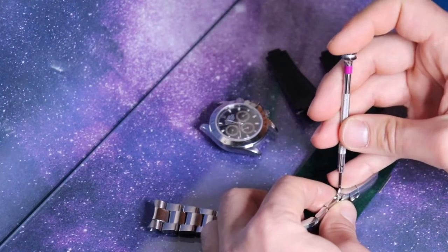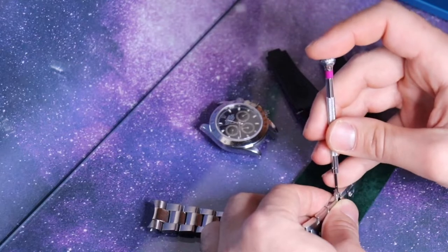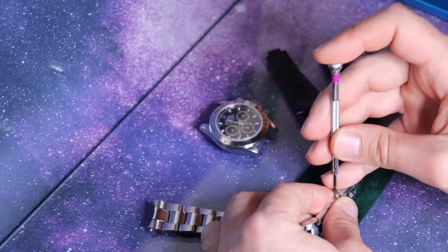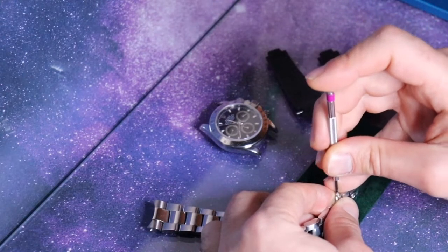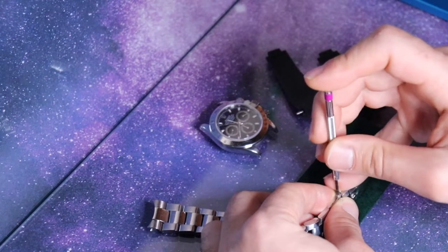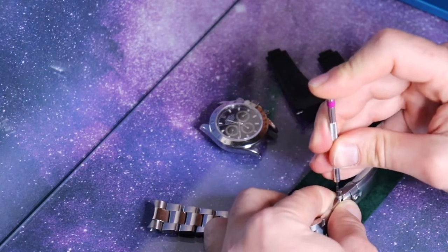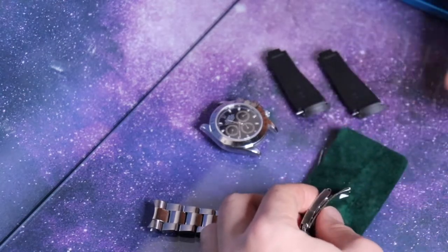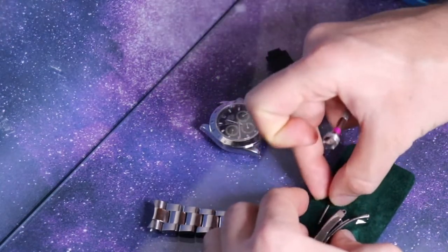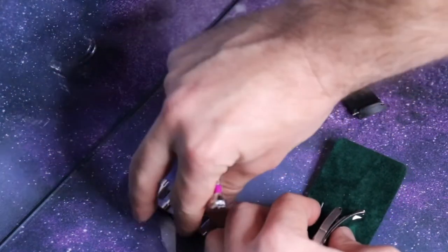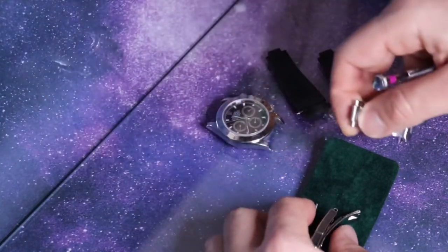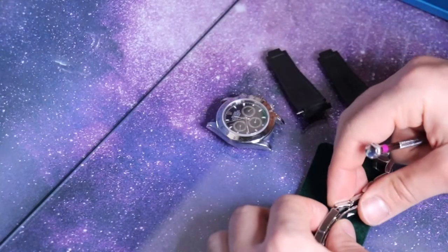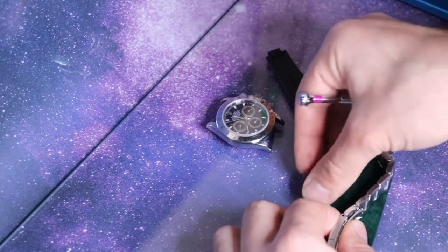It's recommended that you actually put Loctite on the other side. Now I will also have a video about how to apply and take off Loctite from your bracelets that applies to pretty much any watch that has Loctite used on the screws and the connection on the links.